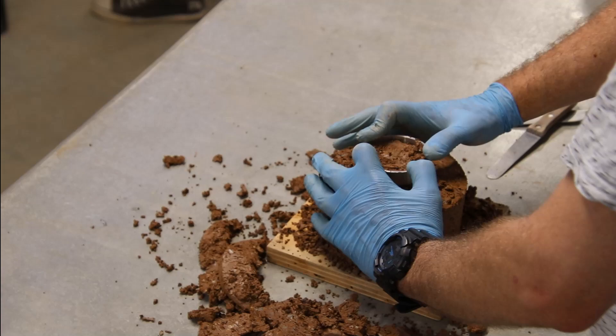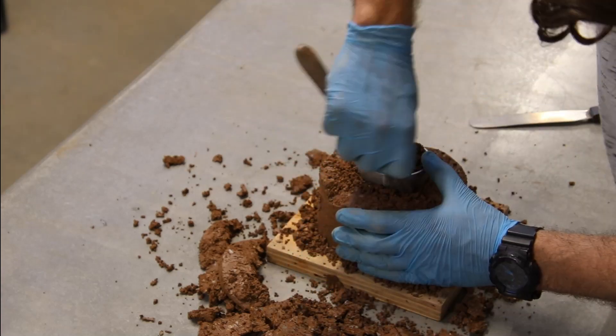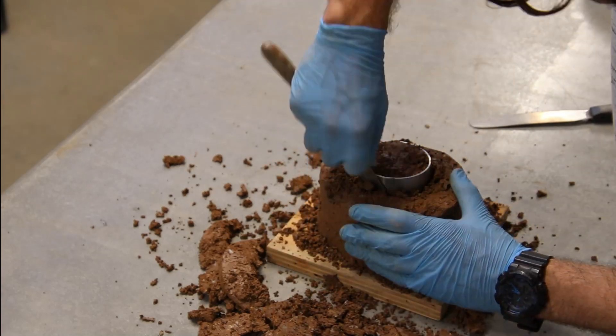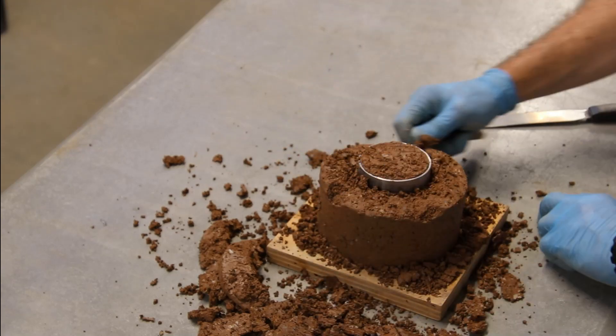Gather some of the trimmings to get a moisture content before the test. Repeat the scraping and trimming. Continue until about half a millimeter of the sample is protruding out of the confining ring as shown.